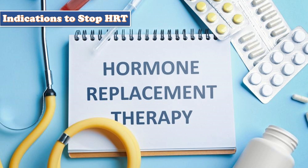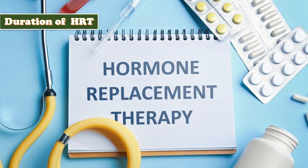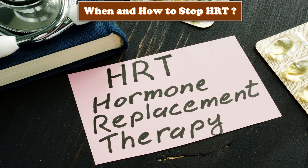Indications to stop HRT include stopping 4–6 weeks before elective surgery, if jaundice appears, if there is a significant rise in blood pressure, or if the patient develops symptoms of migraine. Regarding maximum duration, ACOG recommends that routine discontinuation of HRT at age 65 should not be enforced, but careful consideration of individual health and benefits should be done at all ages. There is insufficient evidence to recommend abrupt stopping versus gradual tapering.